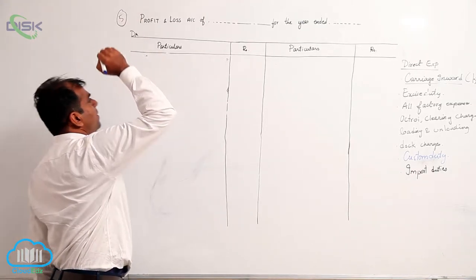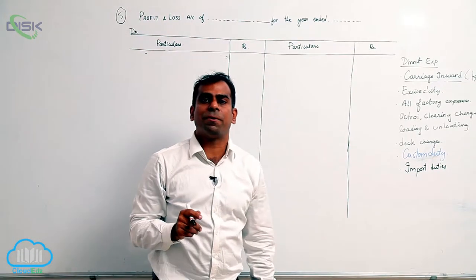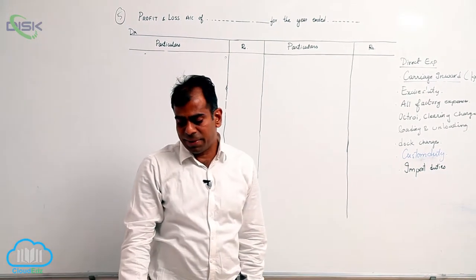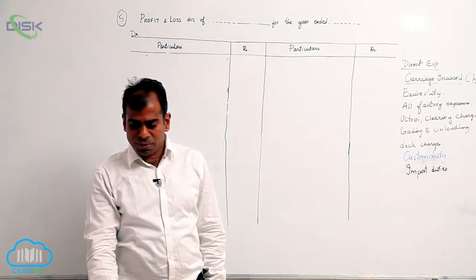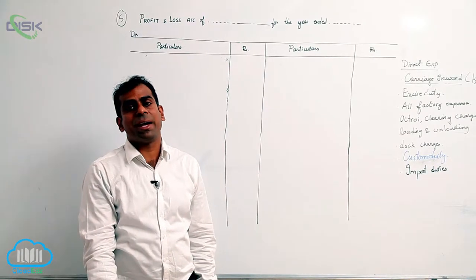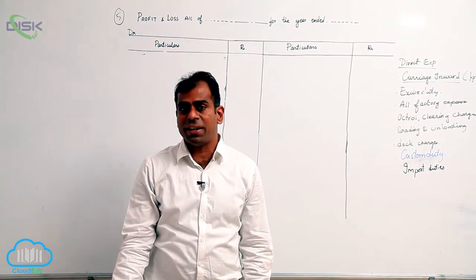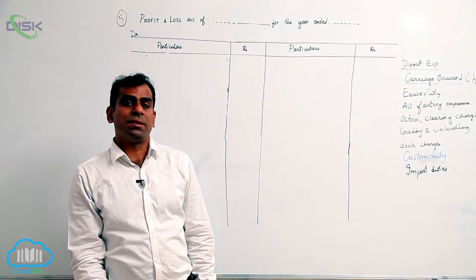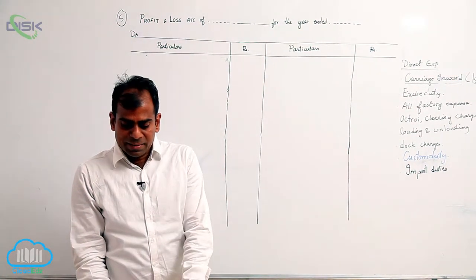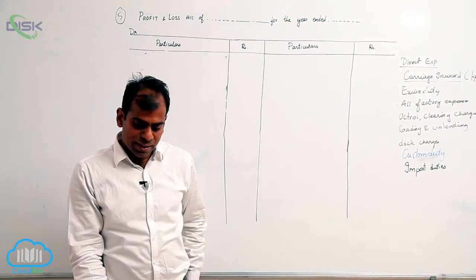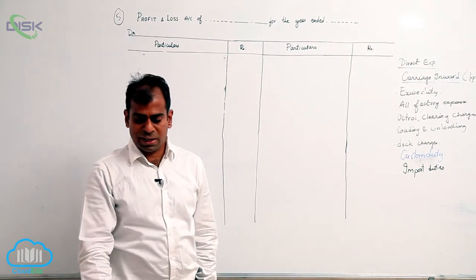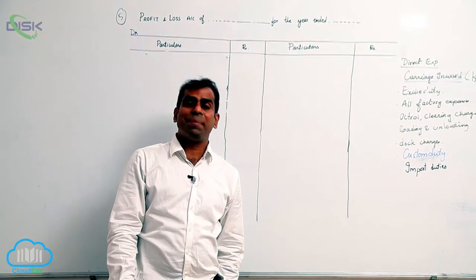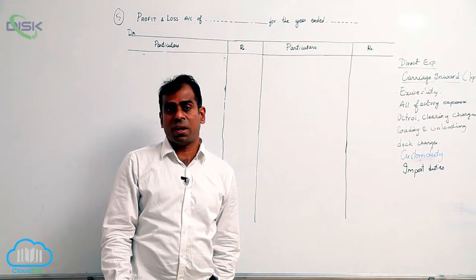In problem number five, we are instructed to prepare a profit and loss account for the year ended 31st December 2013. The items given are salaries, rent, stationery, discount allowed, advertisement expenses, commission paid, and discount received — all being nominal accounts.